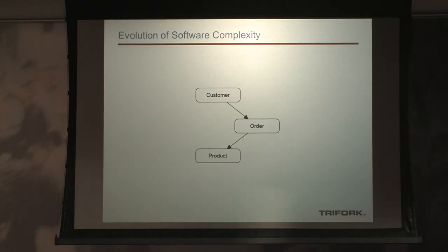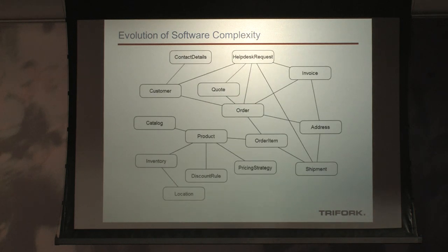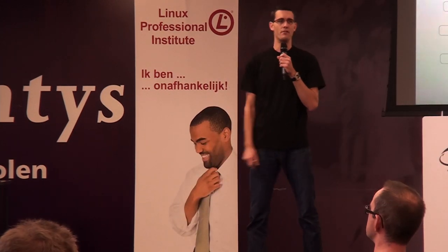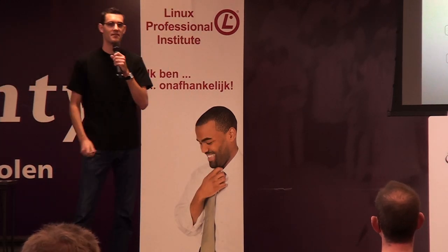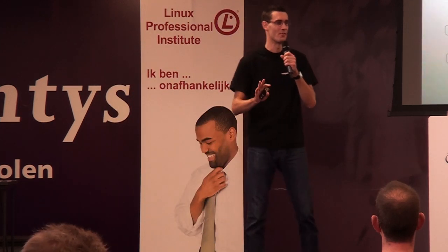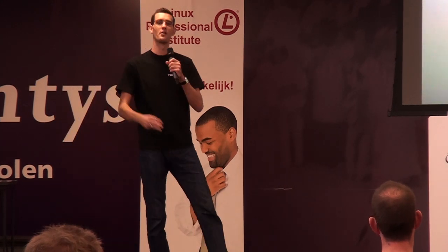In a webshop example, all you have is a customer who comes in and buys a product. But you suddenly notice you need an order, because a customer can buy multiple products. As time progresses, this model and all these entities that we are managing in our application start to grow beyond control. We all have this feeling that everything grows beyond our control to some extent.